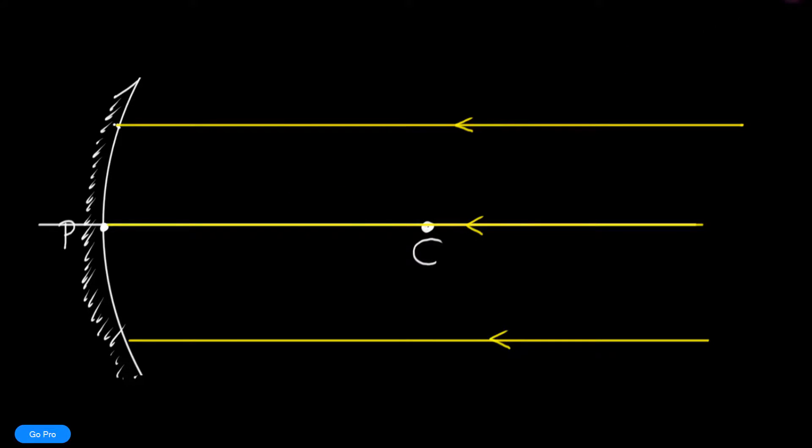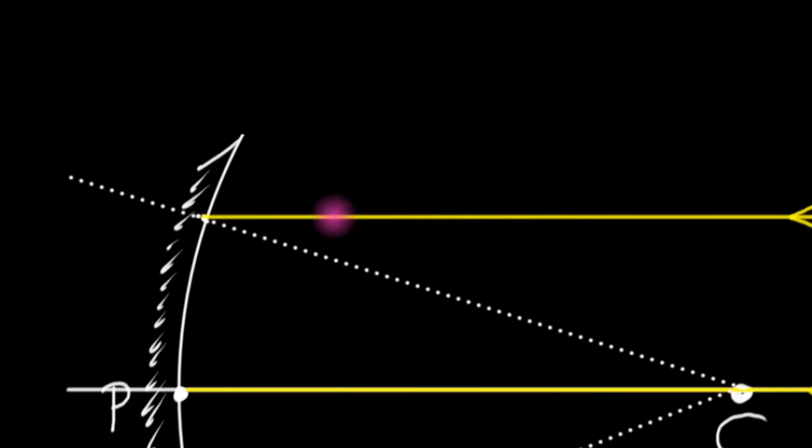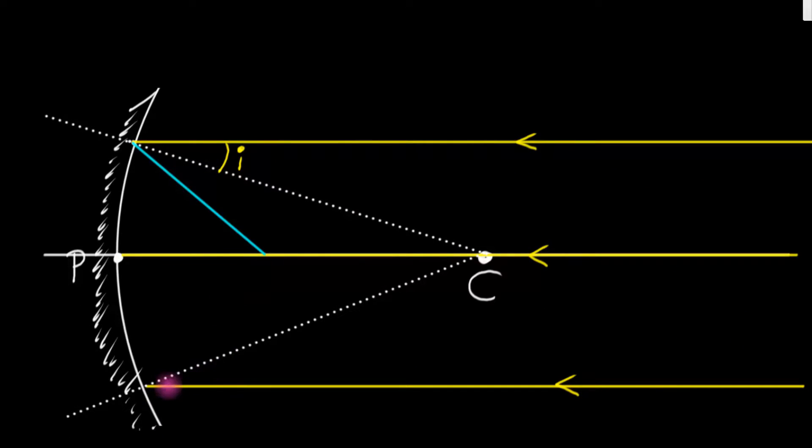To draw that, first I need some normals. Here is normal number one. Now I can see the angle of incidence over here, my angle of incidence i. Now I need to take this ray and reflect it. I'm going to use blue for reflection. I'm going to reflect it back and make sure that the angle is exactly the same.